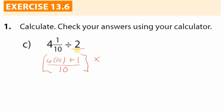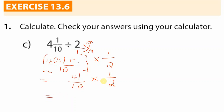As soon as we multiply we need to swap around. Two has an invisible bottom of one — two divided by one is simply two — so the one goes upstairs and the two comes downstairs. Four times ten is 40, plus one gives us 41 over 10, multiplied by one-half. We can't cancel any factors, so we multiply tops: 41 times 1 is 41. Bottoms: 10 times 2 is 20.